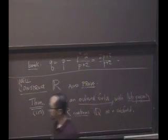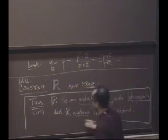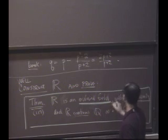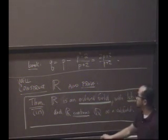So there are three things we are going to show about our construction. Number one, it's an ordered field. Number two, it has at least upper bound property. Number three, it extends Q.